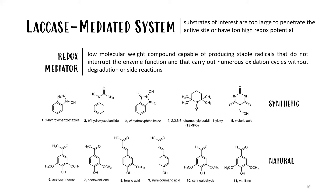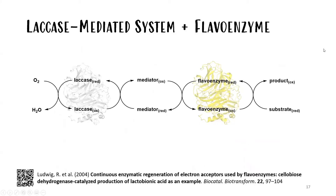Mediators can have three different mechanisms of oxidation: electron transfer, radical hydrogen transfer, or, as in the case of TEMPO, ionic oxidation. This mediator system was also used to regenerate a flavoenzyme, which I found quite interesting — the redox mediator shuttled electrons between the lacase and a flavoenzyme, which was a cellobiose dehydrogenase in this example.